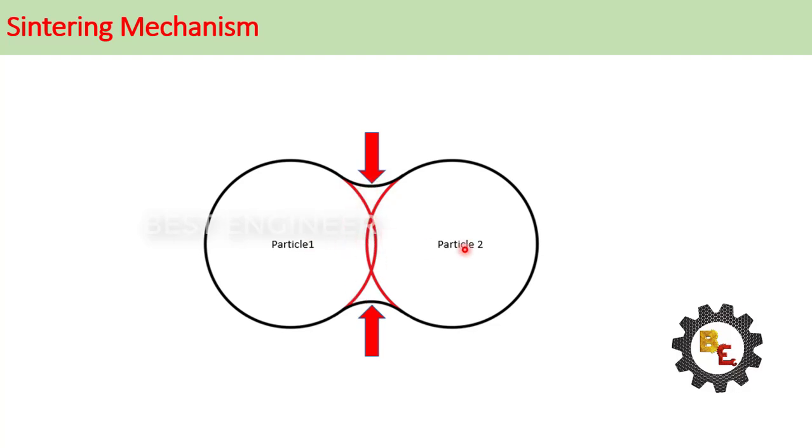Particle 1 and particle 2 are there. When the laser source is passed over the powder particles, boundary of the particles gets micro melting and neck is formed between the powders and the joining is made between the powder particles.